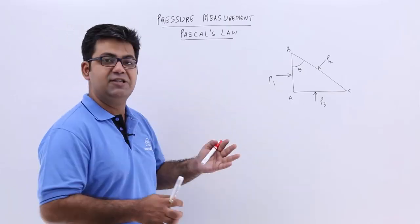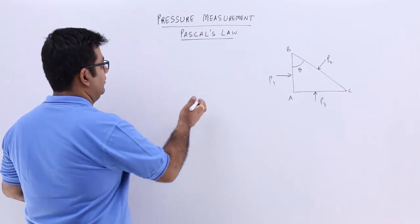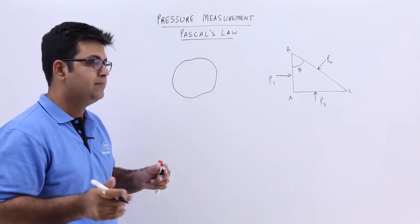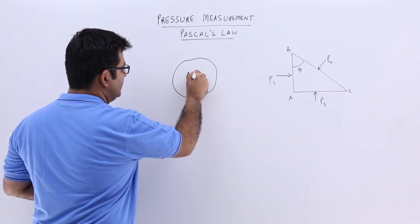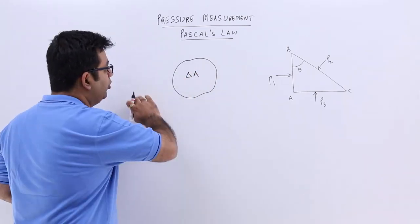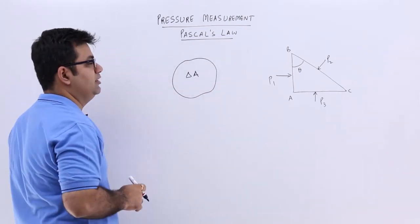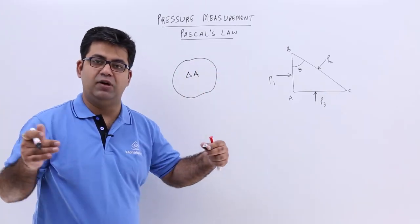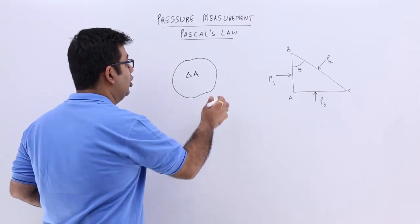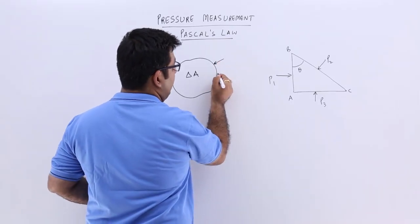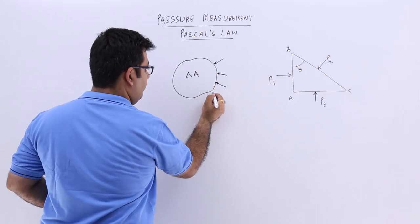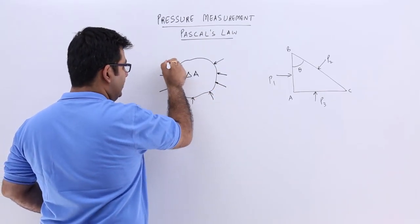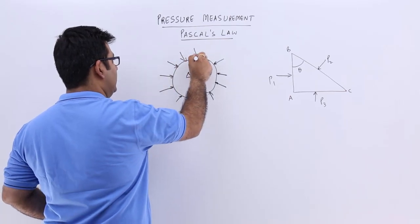First, let us understand what pressure is. We have a very small elementary fluid area — let us say delta A. Fluid around this element is exerting a force from all sides onto this area. The fluid in the surroundings is putting a force on this element from all sides.